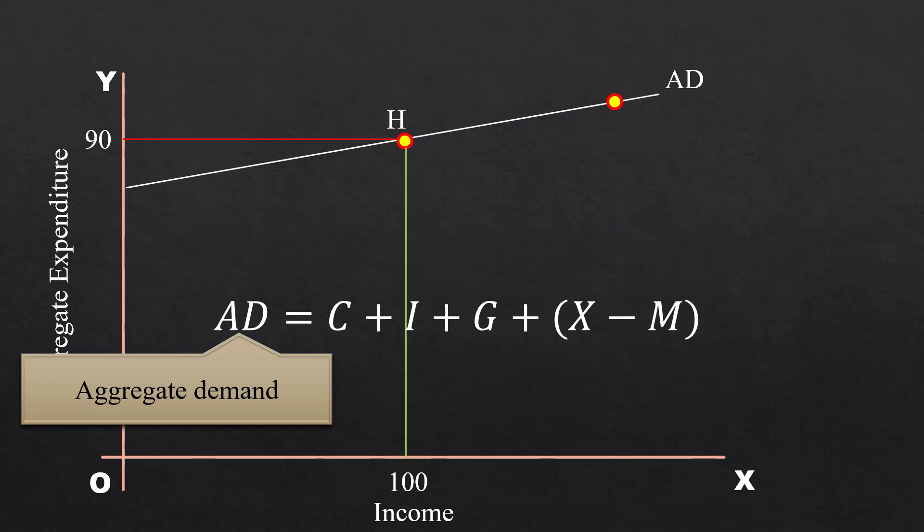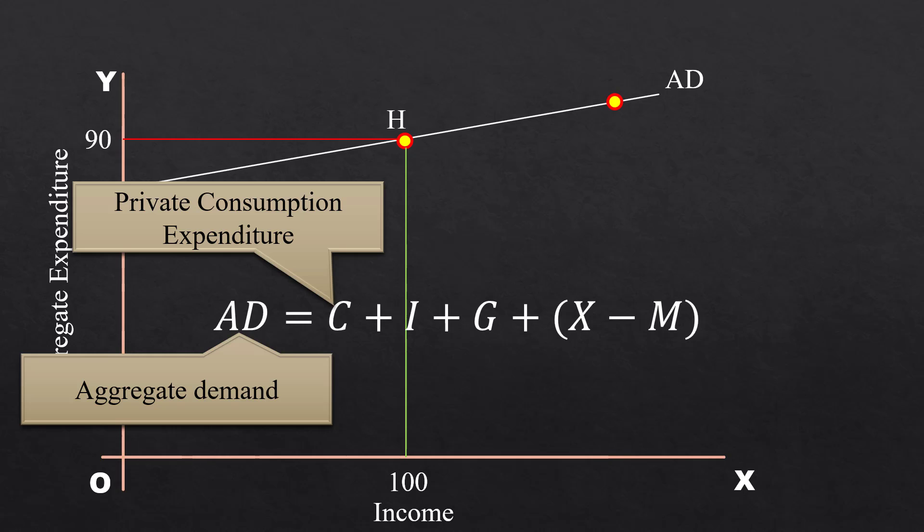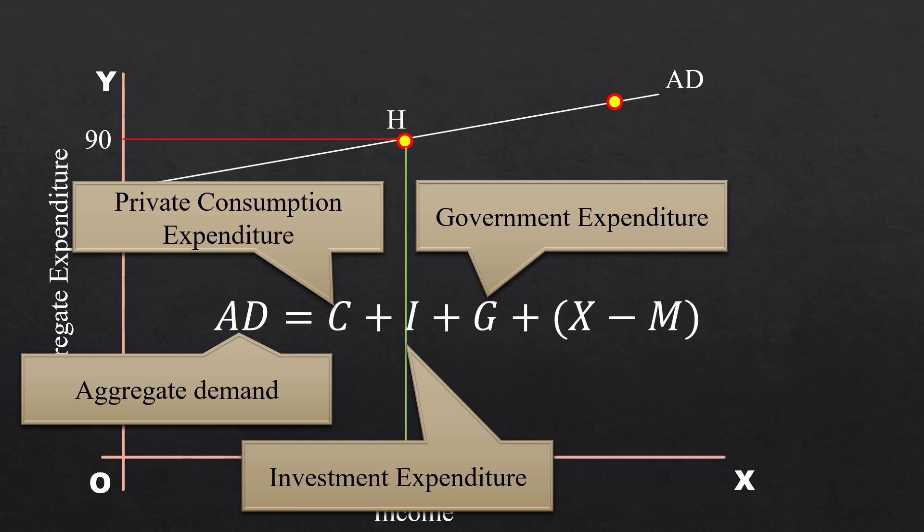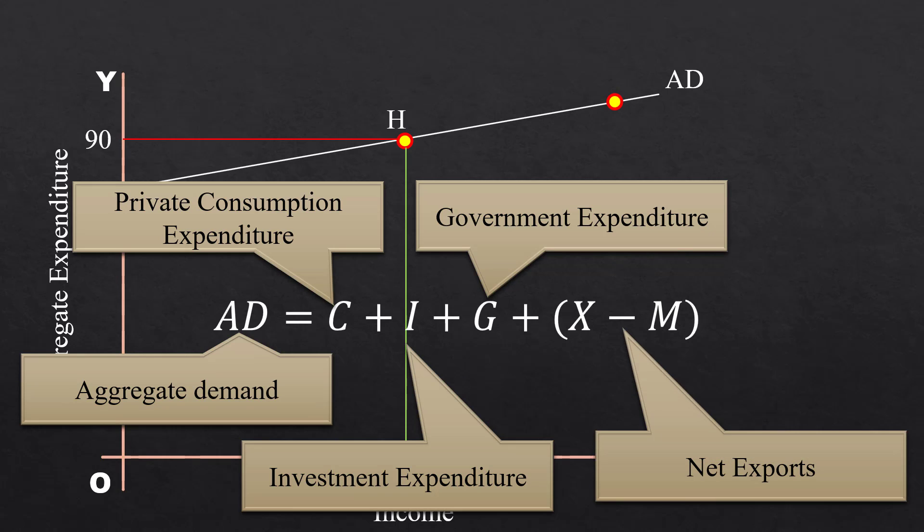Aggregate Demand is the sum of private consumption expenditure, investment expenditure, government expenditure, and net exports. Let us see them one by one.